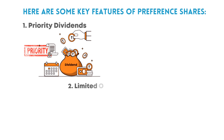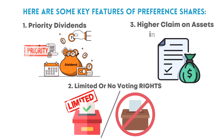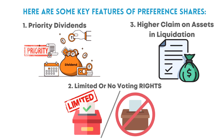Second, limited voting rights: preference shareholders typically do not have voting rights on company matters, such as the election of directors or approval of mergers and acquisitions. Third, higher claim on assets in liquidation: if a company goes bankrupt and liquidates its assets, preference shareholders have a higher claim than common shareholders, making them more likely to recover some of their investment.